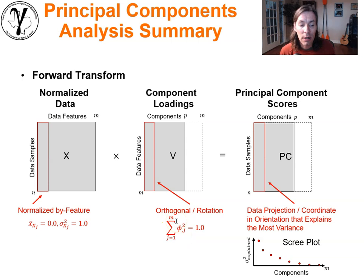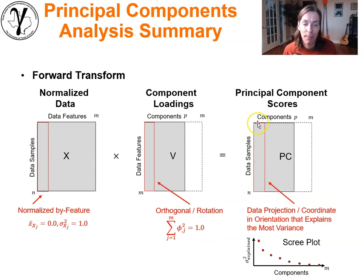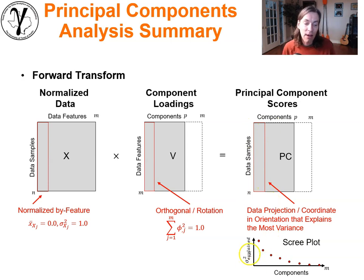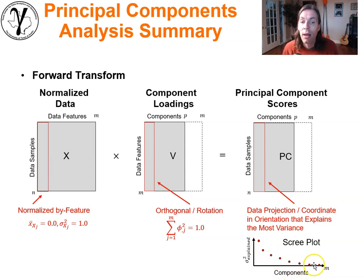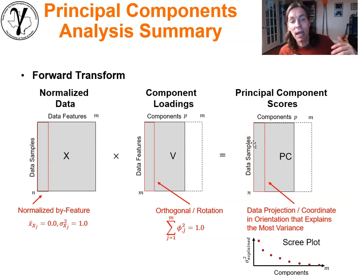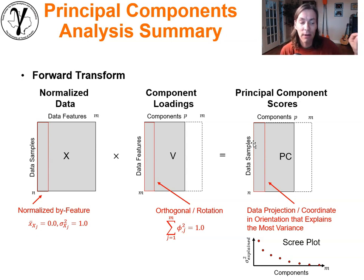Looking at variance across samples for each principal component, we can produce a scree plot — variance within each component versus the component number. It will decrease from first to last because variance is maximized in the first principal component, and the second maximizes under orthogonality to the first. So it goes from highest to least variance described.